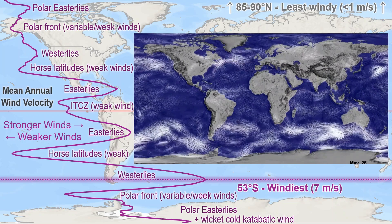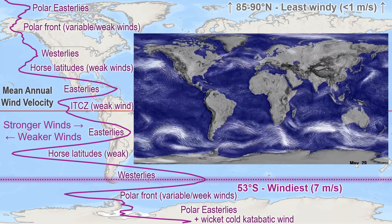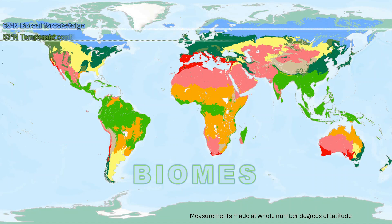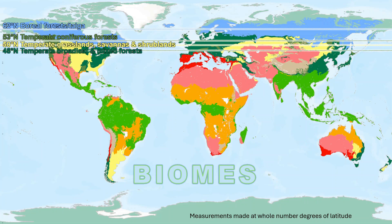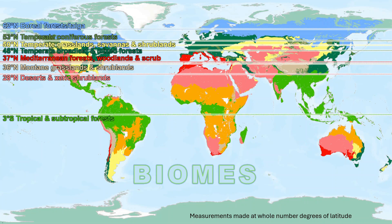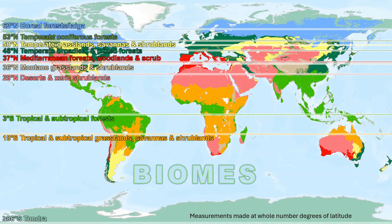With latitudinal climatic trends, there are also latitudinal patterns associated with Earth's biomes. The parallel most dominated by each major biome includes 62 degrees north for boreal forests, 53 north for temperate coniferous, 50 north for temperate grasses, 46 north for temperate broadleaf and mixed forests, 37 north for Mediterranean, 36 for montane grasses and shrubs, 28 north for desert and xeric shrubs, 3 degrees south for tropical and subtropical forests, 18 south for tropical and subtropical grasses, and over 86 degrees south for tundra.